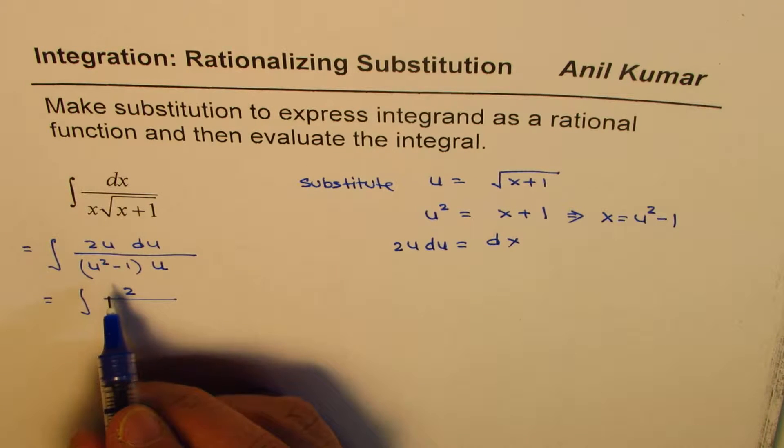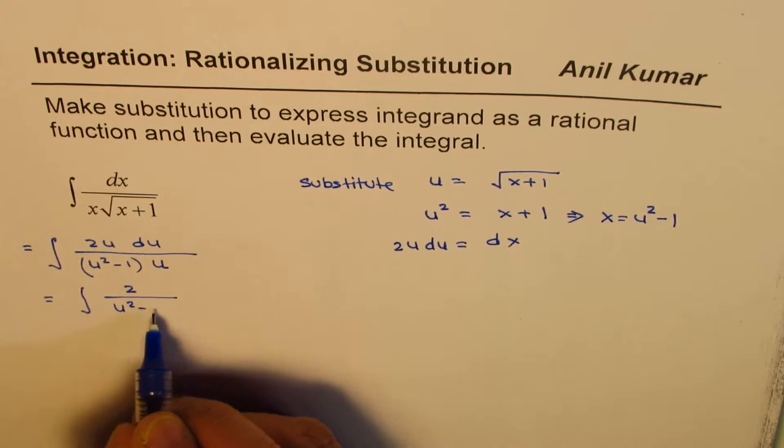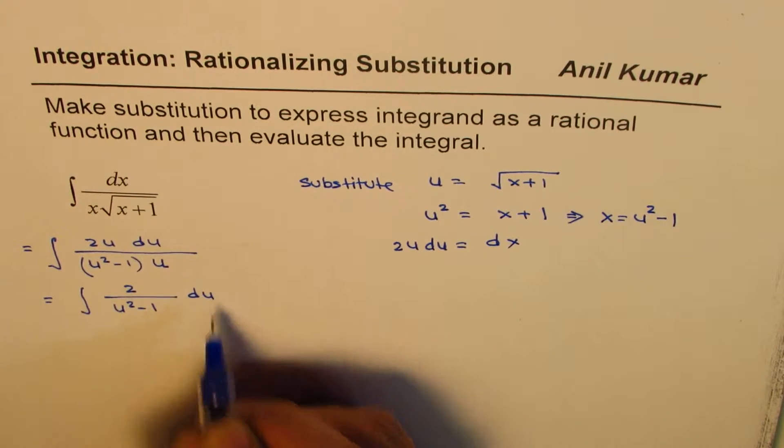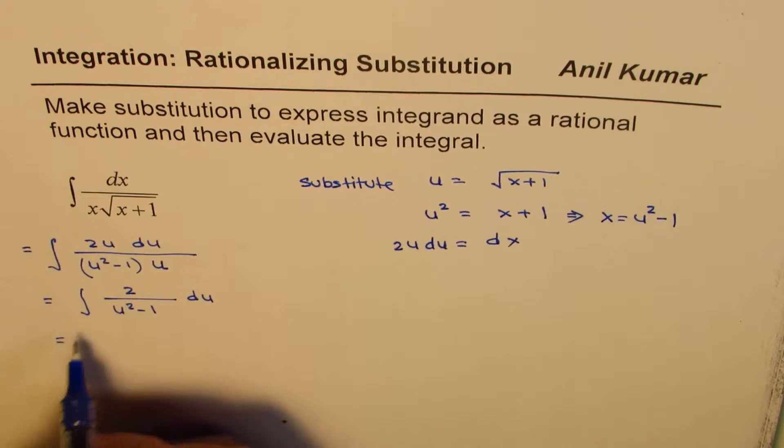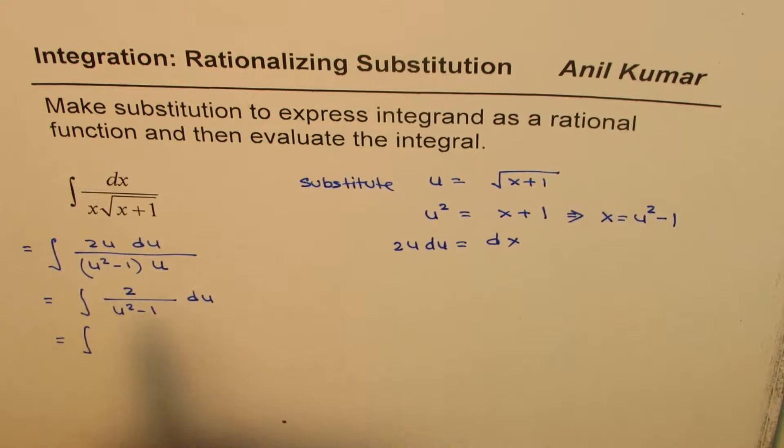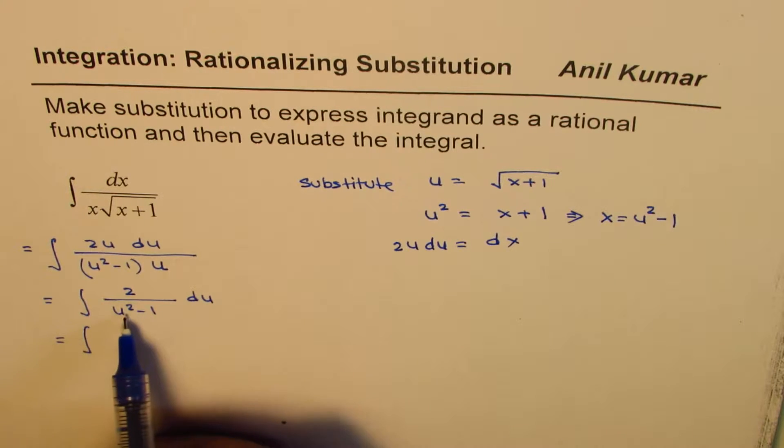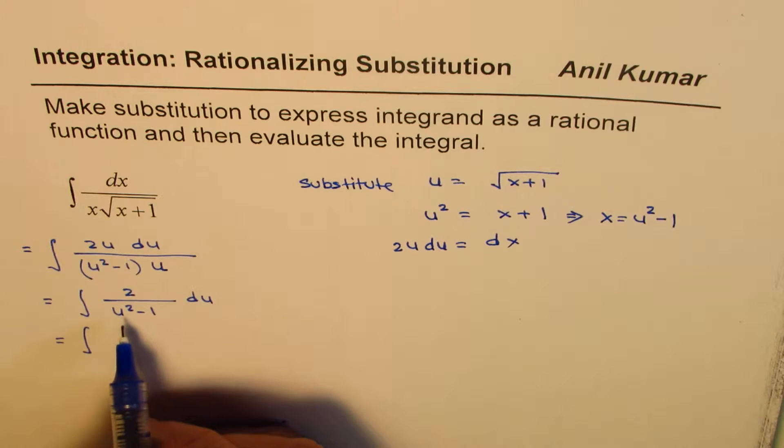Since it cancels we get 2 over u square minus 1. So u square minus 1 could be written as, let me write it in steps, u square minus 1 du. So that's what we get which we could actually write as combination of, we have written this as a rational function. So we can now do it by partial fractions.